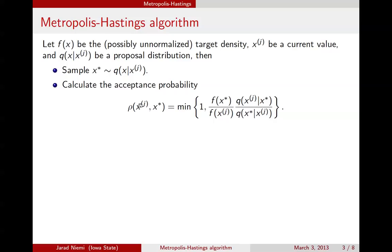The next step is to calculate the acceptance probability. We start with the ratio of the target density for the proposed value versus the current value. We multiply that by the ratio of the proposal density values — in the denominator, how likely was the proposed value given our current state, and in the numerator, how likely would the current value have been if we were currently at the proposed value. We take the minimum of that ratio and 1, ensuring the acceptance probability is between 0 and 1. We call that the acceptance probability of moving from x_j to x*.